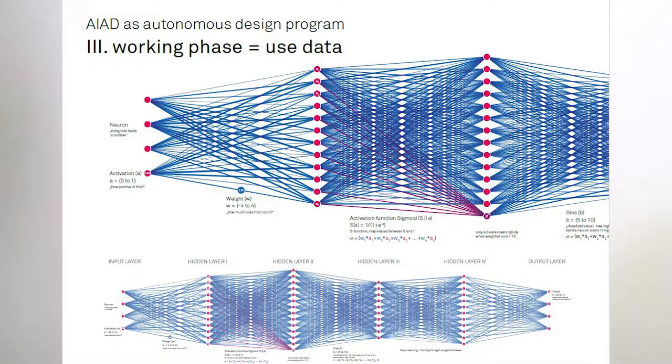So in the third phase, the working phase where we use the data, all our weights and biases in the artificial neural network are already weighted and defined. So it's clear for the program when we have a certain input what kind of working processes are possible to emerge from that input and in which different directions the final design could go. So the program is able to create new algorithms, for example for the category sports hall, a theatre, or a museum.